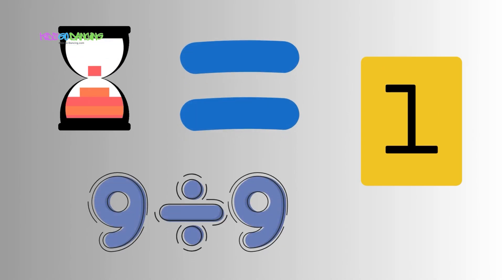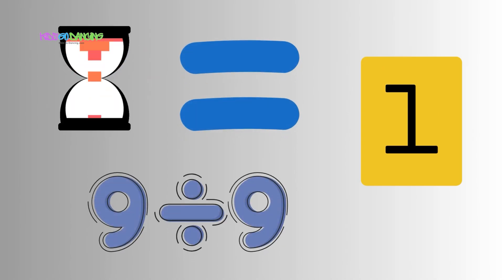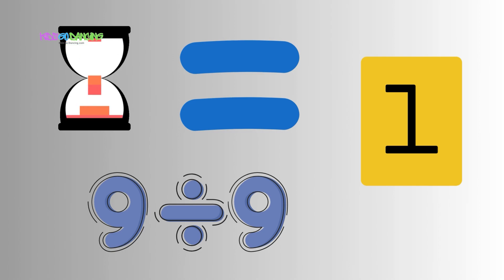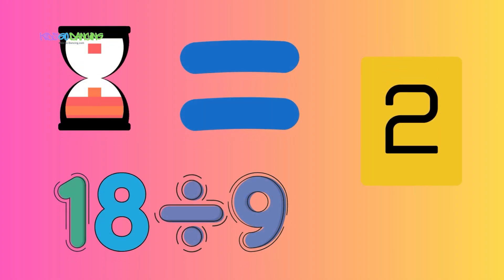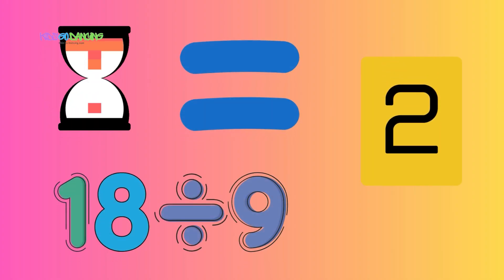9 divided by 9 is 1. Sharing numbers is so much fun. 18 divided by 9 is 2. Split them up, that's what we do.